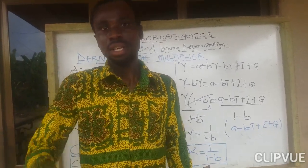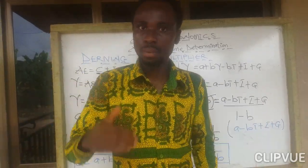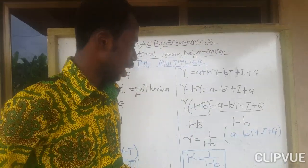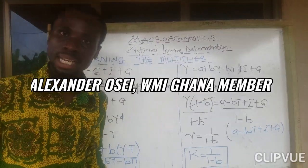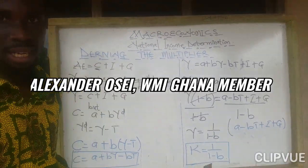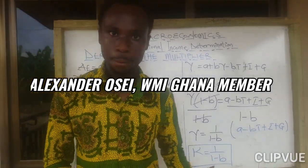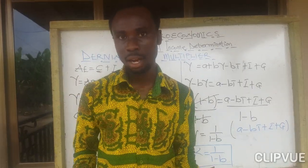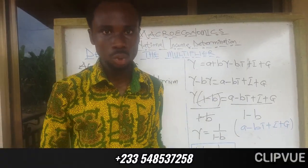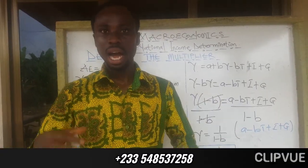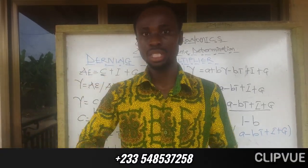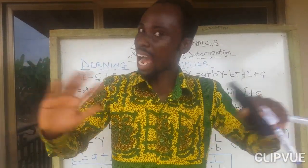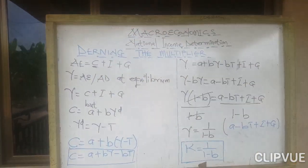Listen carefully — the general multiplier for a lump sum tax is k = 1/(1 minus b). My name is Alexander Osei from Ghana. In our next lecture we are going to look at how to derive tax multipliers. Bye-bye.